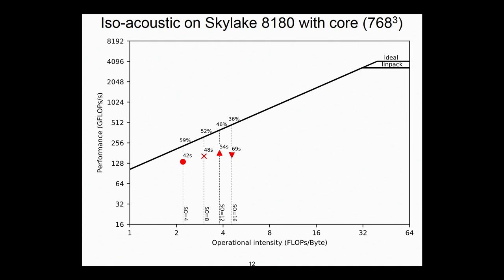Out of the box, without the geophysicists needing to do anything, we're achieving between 36 and 59% of peak. For the purposes of this talk, I'm not going to explain what a roofline model is.